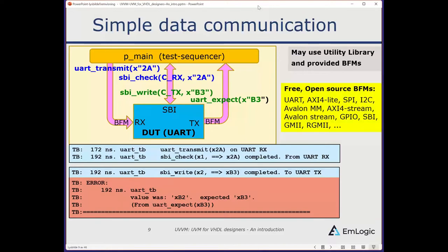There are many free open-source BFMs available with UVVM: AXI Lite, SPI, I2C, Avalon, AXI Stream, Full AXI, and many more — all usable for free. Quick references are provided for everything.